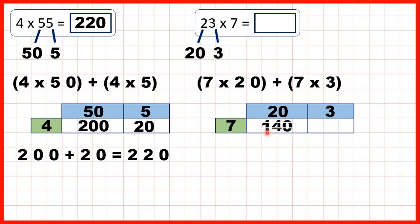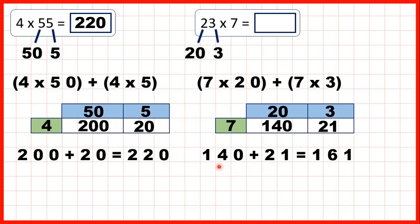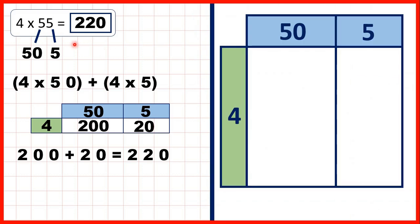Now, 7 times 20 is 140, because 7 times 2 is 14, but because we're multiplying by a multiple of 10, we need a 0 on the end. Then for this box here, we have 7 times 3, so that's 21. So the last thing to do is to add up our answer boxes, and 140 plus 21 is 161, so that's our answer.